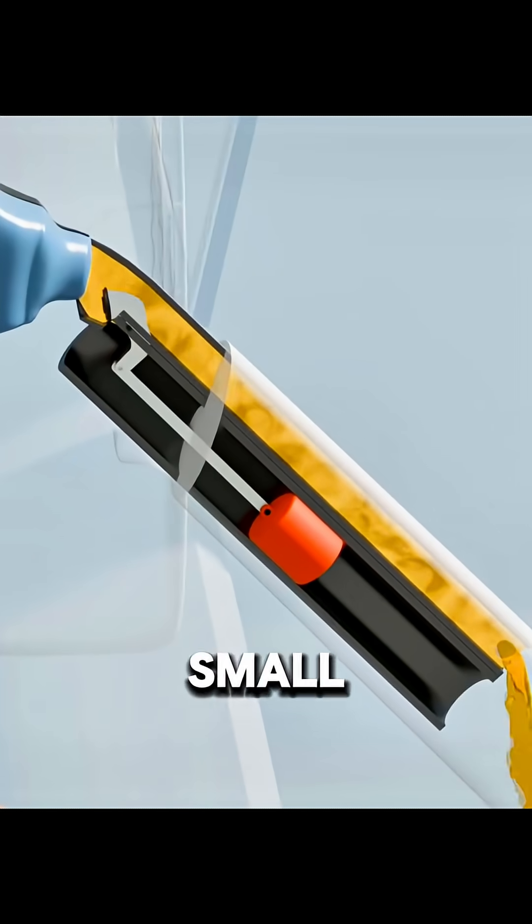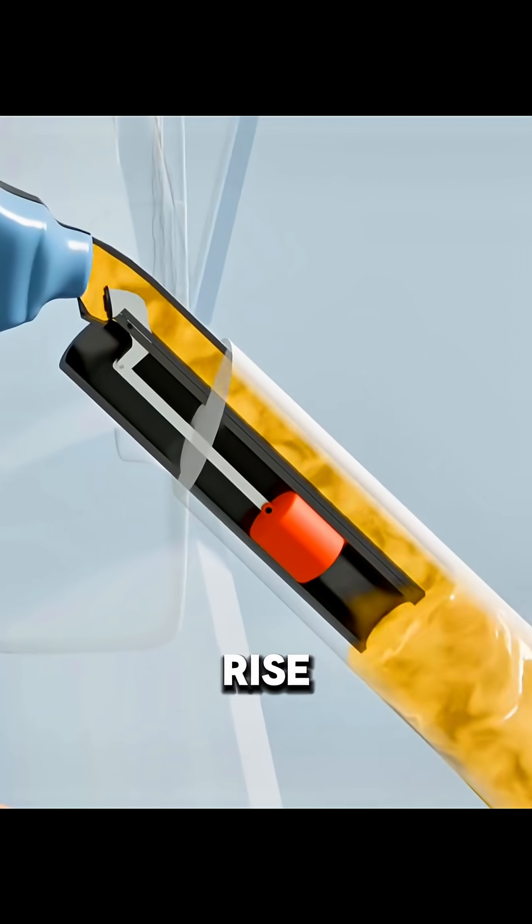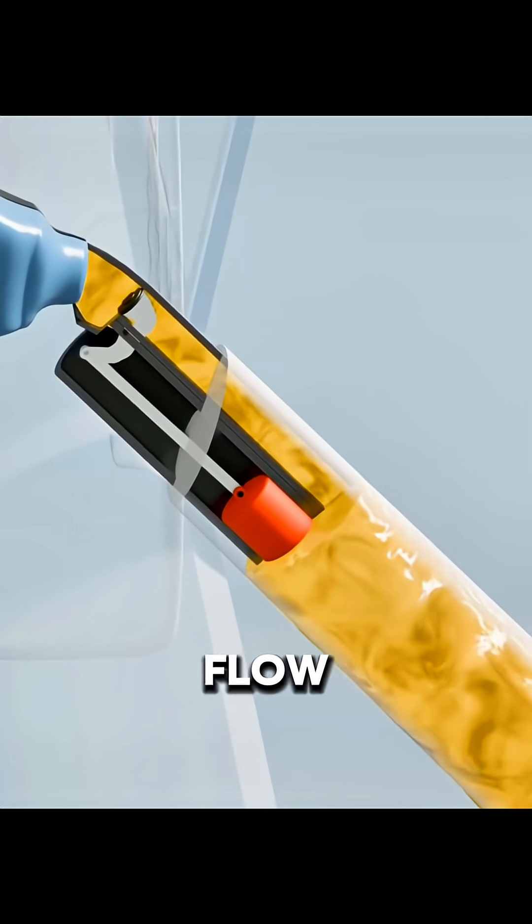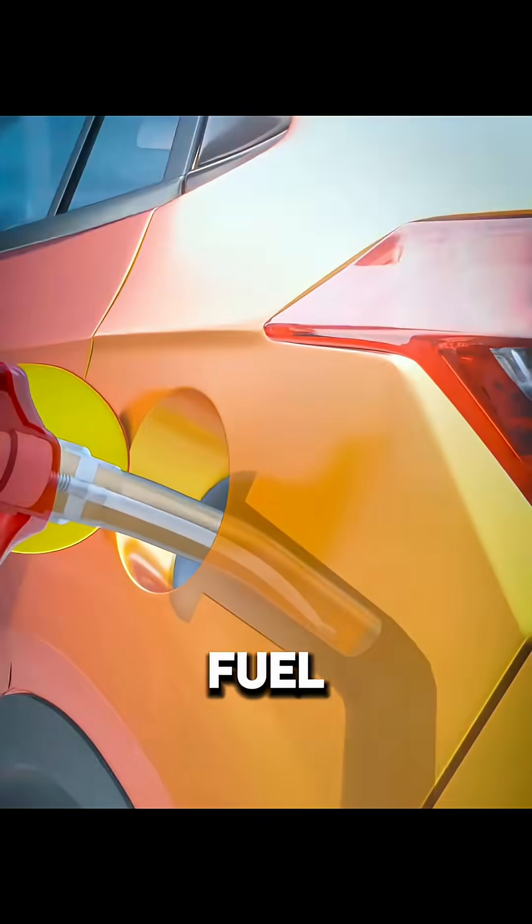Early versions were quite simple. A small float inside the nozzle would rise with the fuel level. Once the tank was full, the float blocked the passage and the flow stopped automatically.